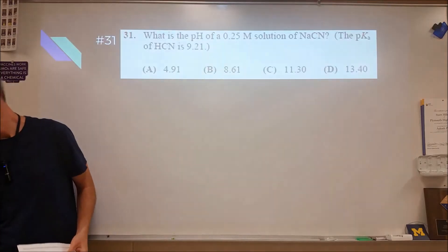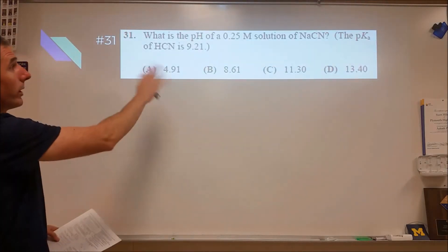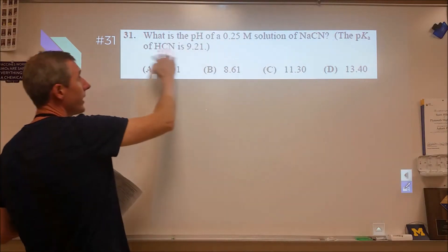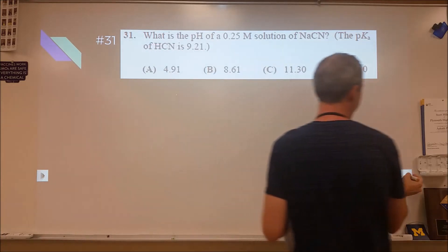So problem 31 gets into some acid-base stuff. Here we have a 0.25 molar solution of the conjugate base that gives us the pKa of the acid, hydrocyanic or cyanic acid.